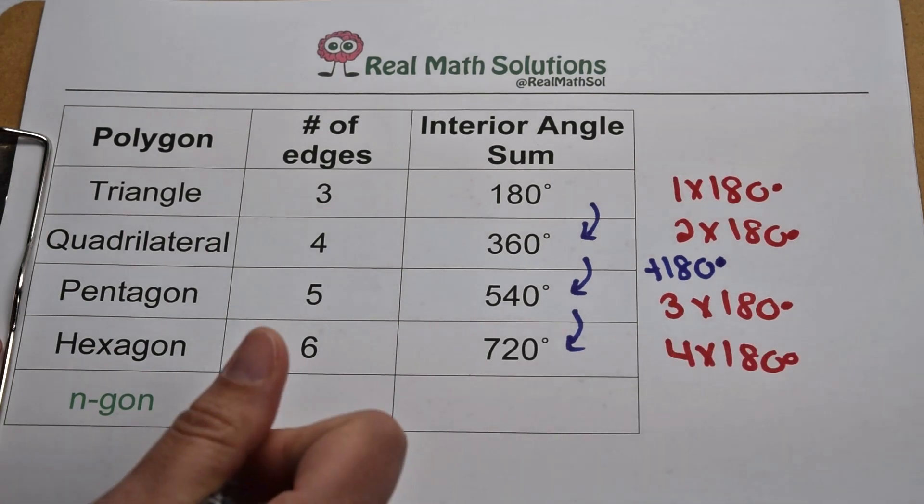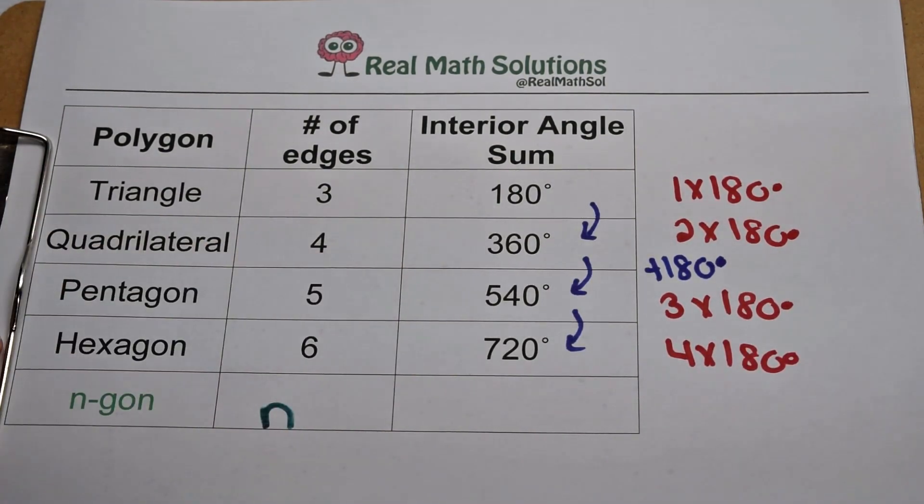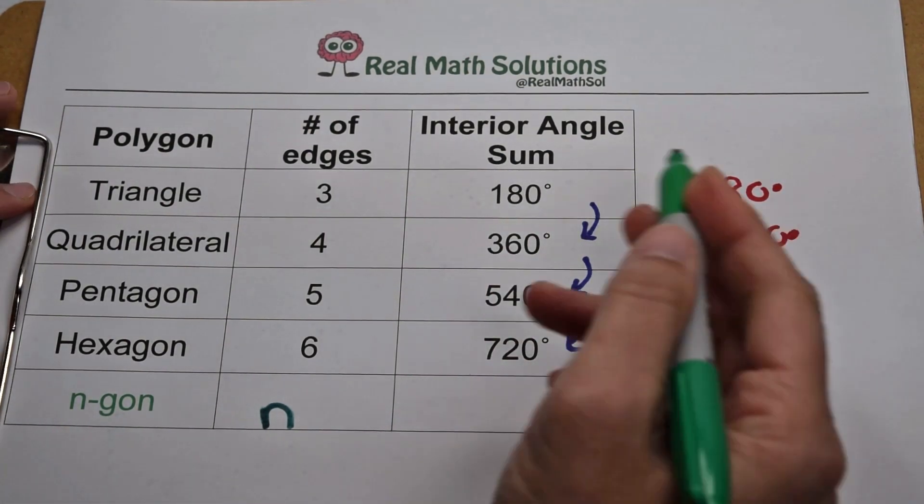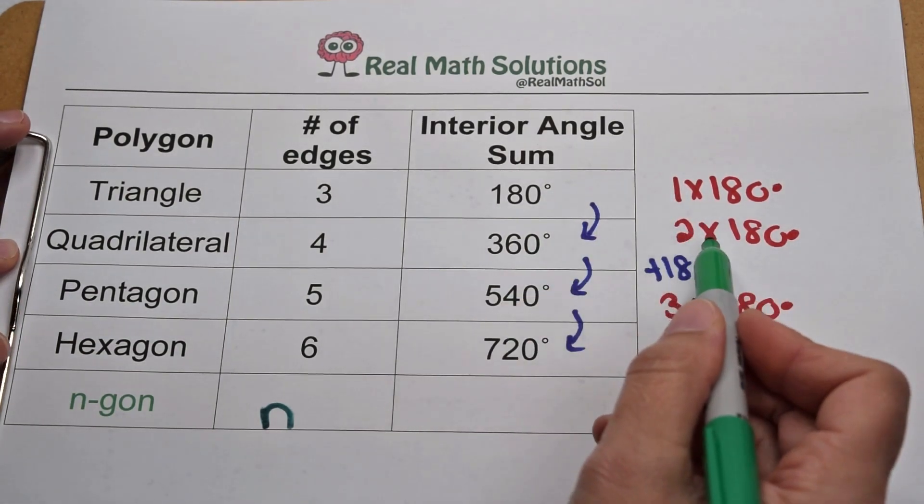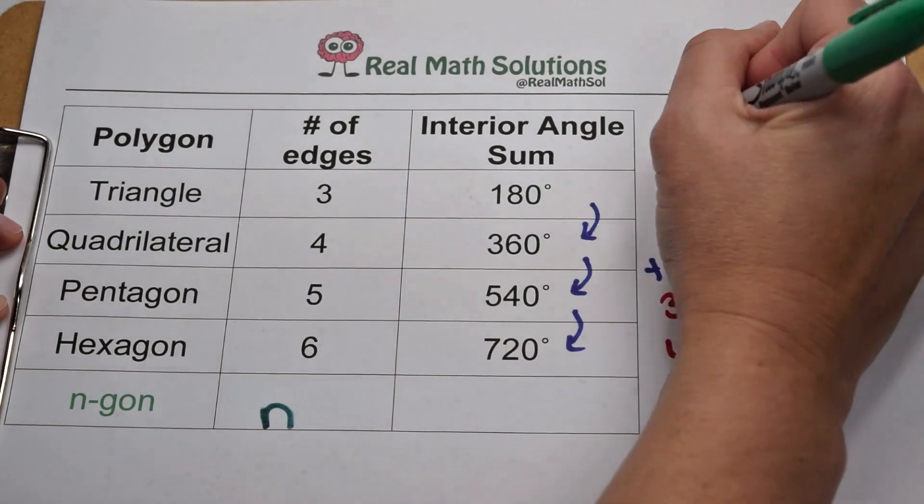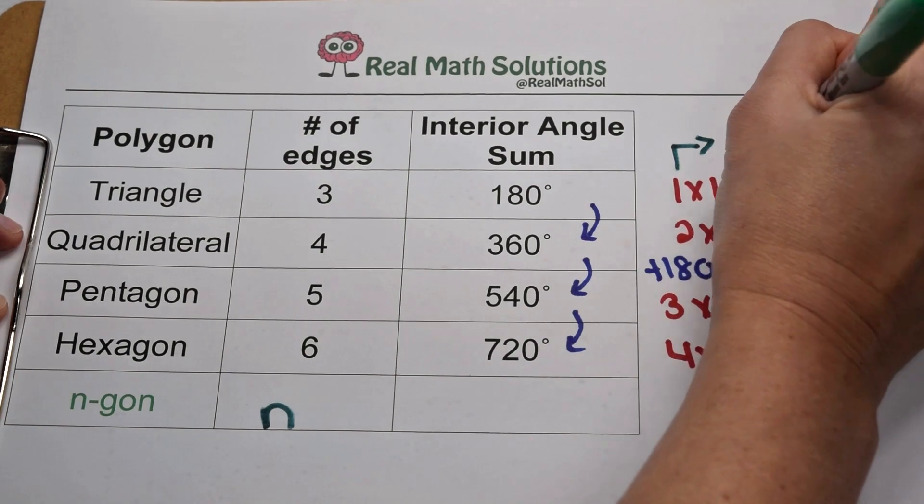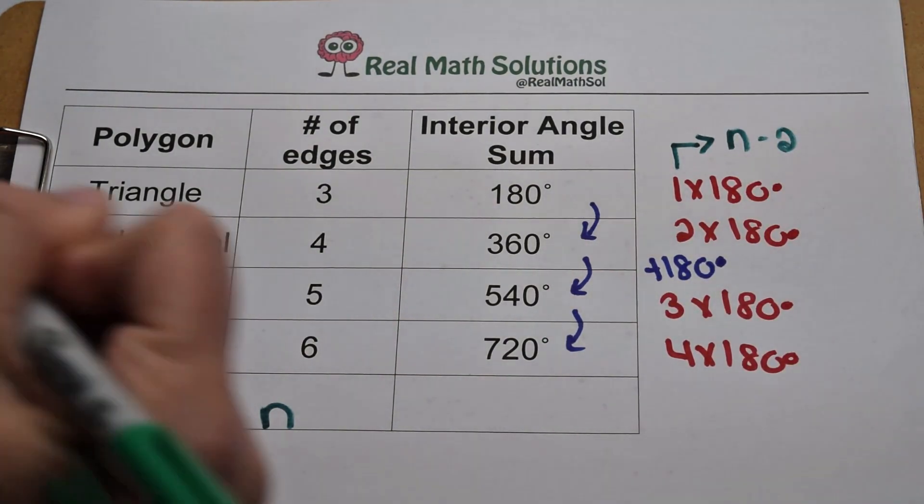So if we want to generate an equation for our n-gon, meaning any number of sides, we know we're going to multiply something times 180. Well again if we look, the triangle has three edges but it's multiplied by 1. The quadrilateral has 4, it's multiplied by 2. The pentagon has 5, it's multiplied by 3. So just like with regular polygons, we again seem to be doing the number of sides minus 2 before we multiply by 180.